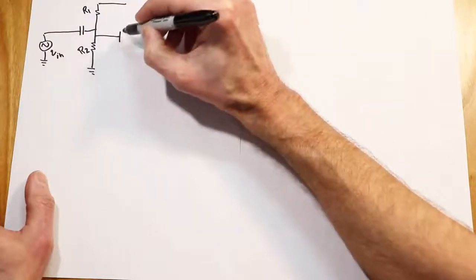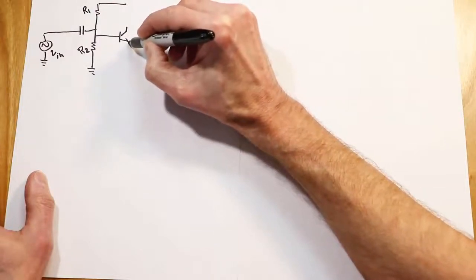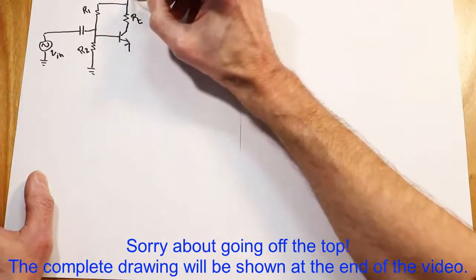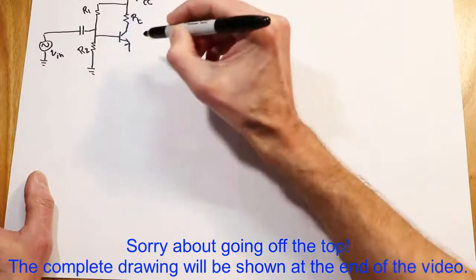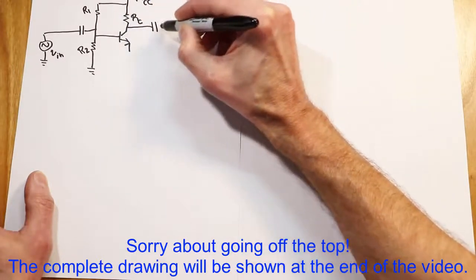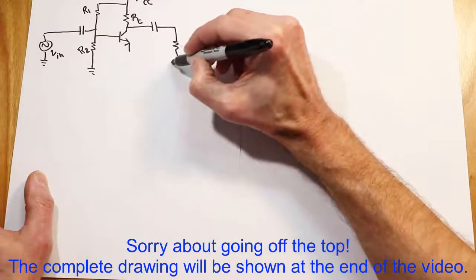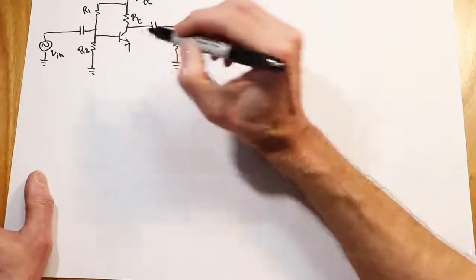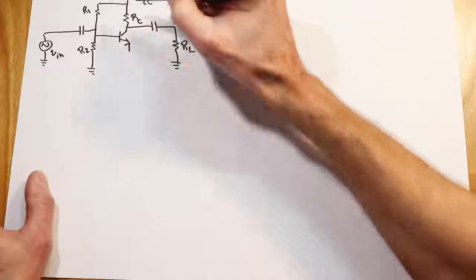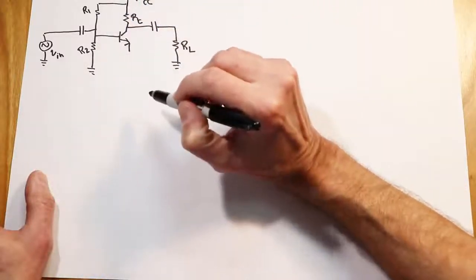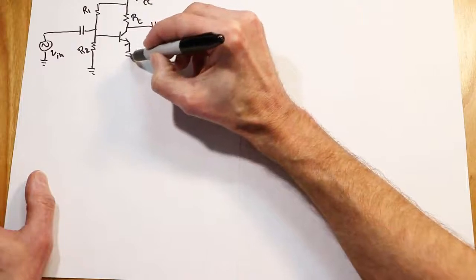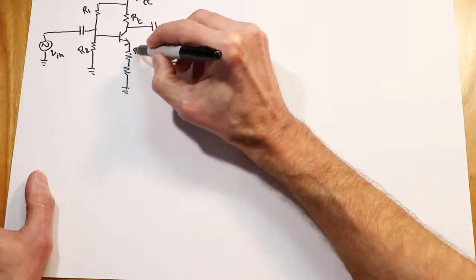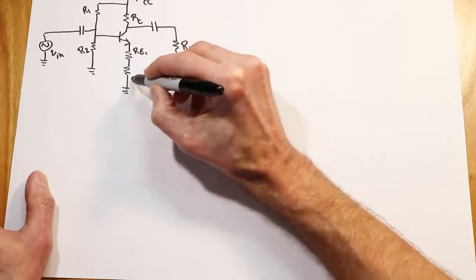There's our transistor. And we have a collector resistor up here, RC. Power supply VCC. Off of this we have a coupling capacitor which will go to our load — the thing that we are driving. Then I'm going to do something a little bit different down here in the emitter. Normally on a biasing circuit we would just have one resistor going to ground, but I'm going to split that in two. I'll have two resistors: the top one I'll call RE1, and the bottom one RE2.